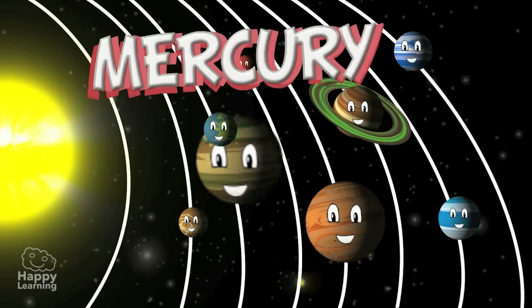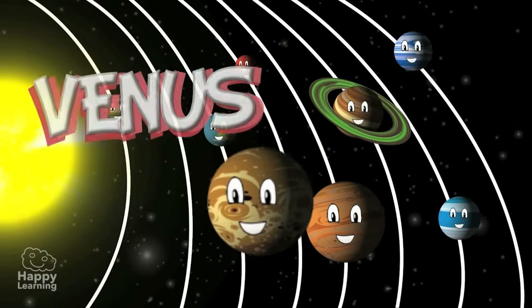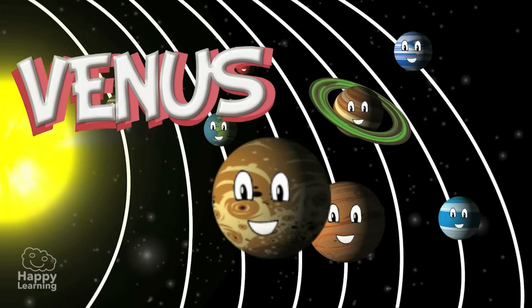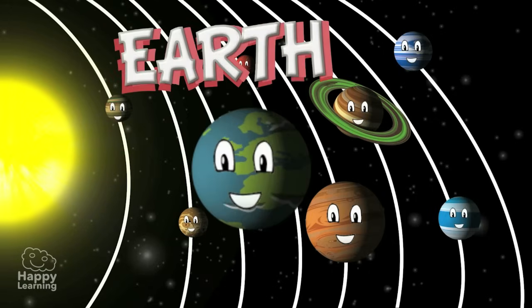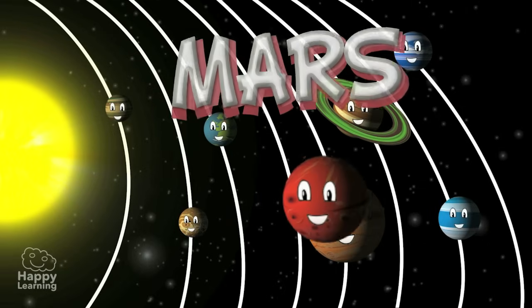The closest planet to the Sun is Mercury. Then there is Venus. Then comes the Earth, yes, our planet where we live. Then there is Mars.